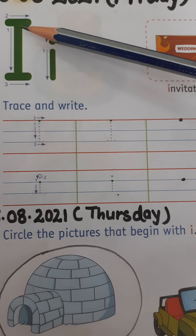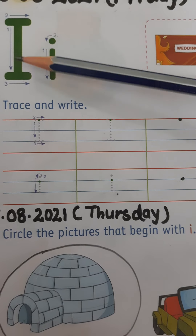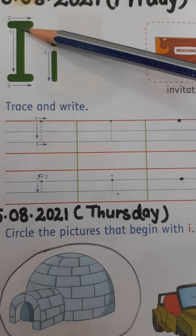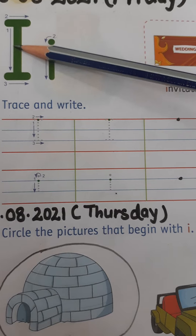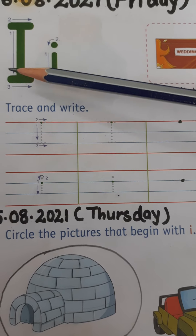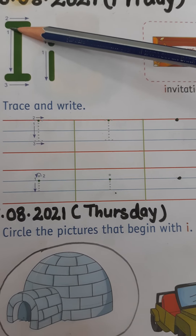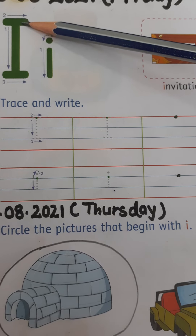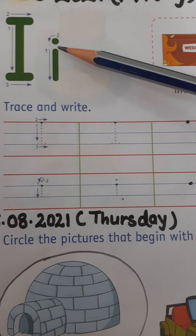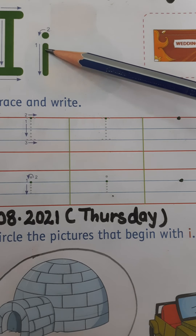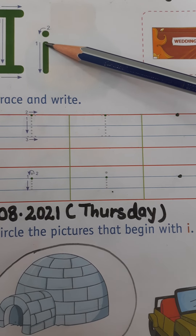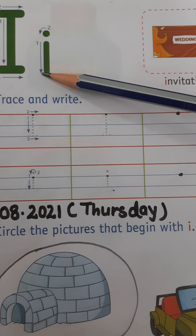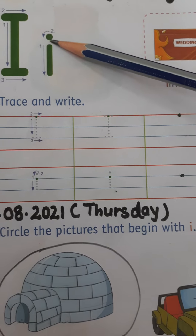This is the formation of capital I. And for small i children, we have to make a small standing line and a dot.